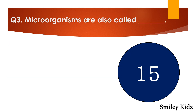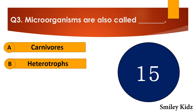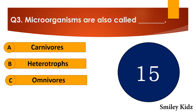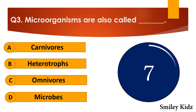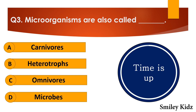Question number three: Microorganisms are also called dash. The options are: A. Carnivores, B. Heterotrophs, C. Omnivores, or D. Microbes. Your time starts now. Your time is up and the right answer is option D — microbes. Microorganisms are also called microbes.